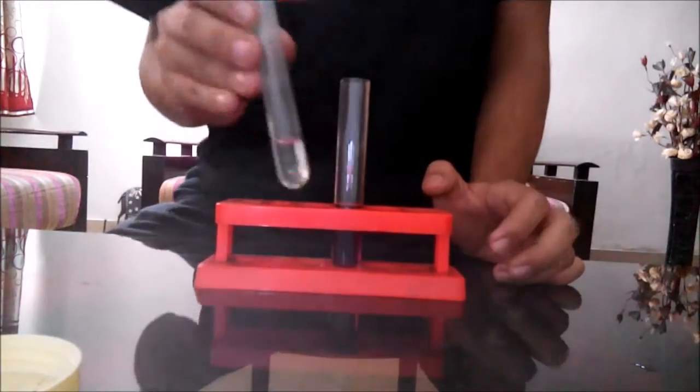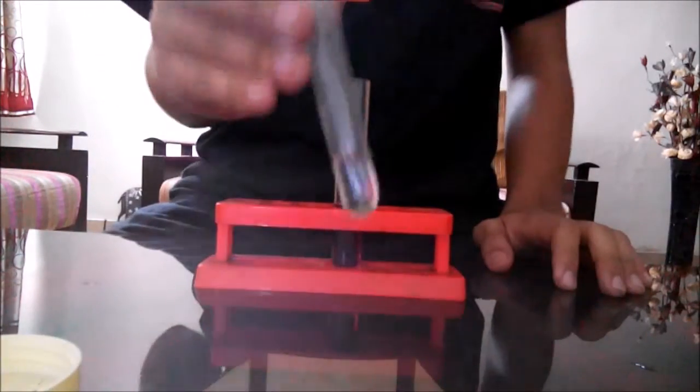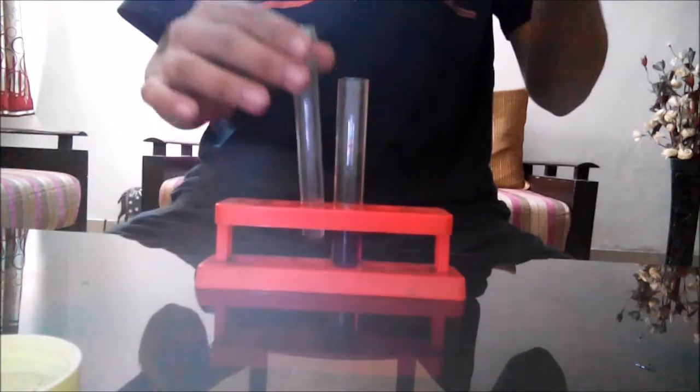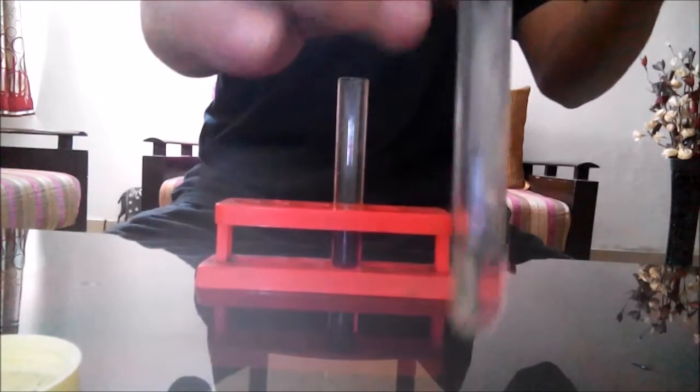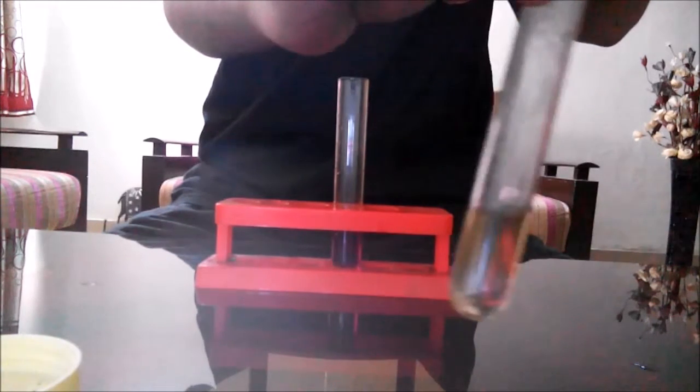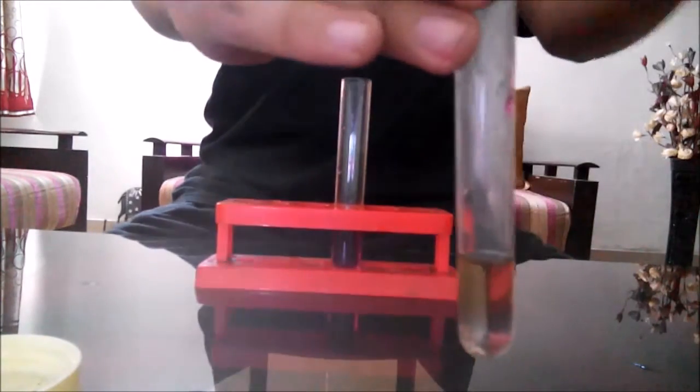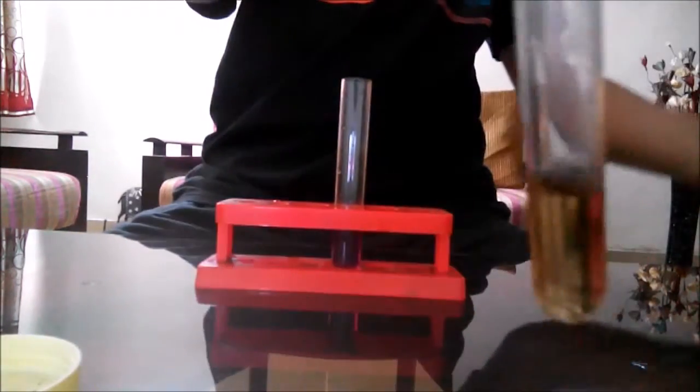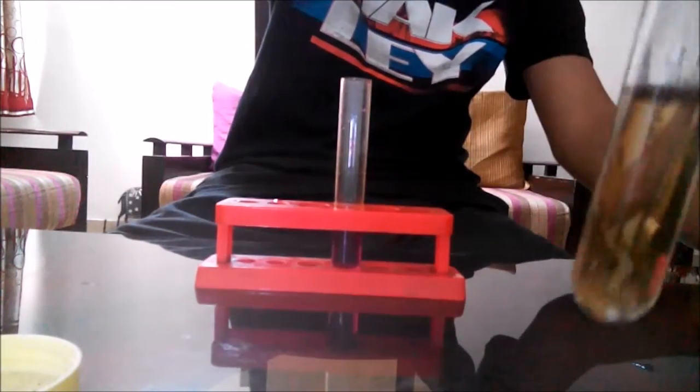Now for the fourth reaction I have hydrochloric acid in this test tube, a strong acid. Just observe the test tube. You will see that the color of the potassium permanganate has disappeared. Once more I am adding—again it has disappeared. This yellow color is probably due to chlorine gas that is being produced in this reaction.